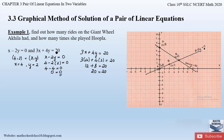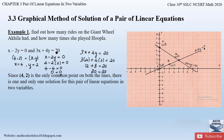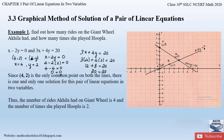Since (4, 2) is the only common point on both lines on the graph, it forms the unique solution for this pair of linear equations. Since x was the number of rides on the giant wheel and y the number of times Akhila plays hoopla, Akhila had 4 rides on the giant wheel and played hoopla 2 times.